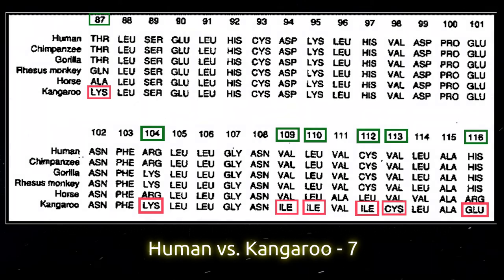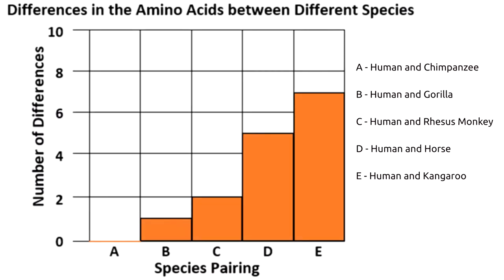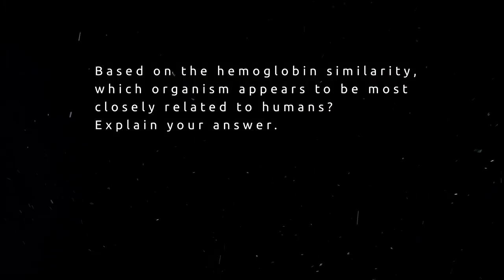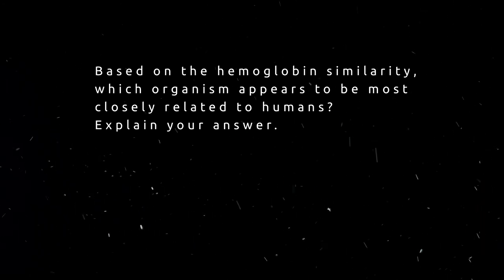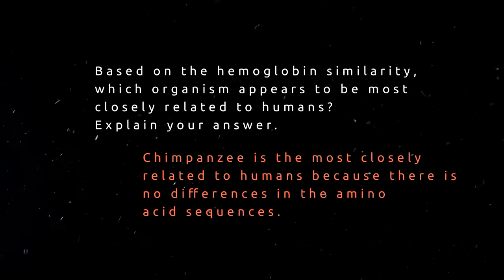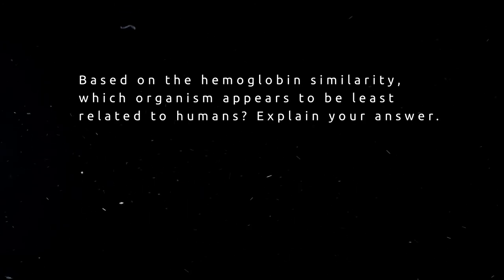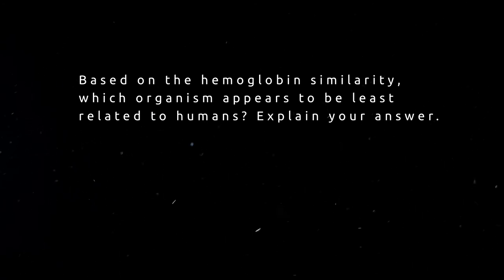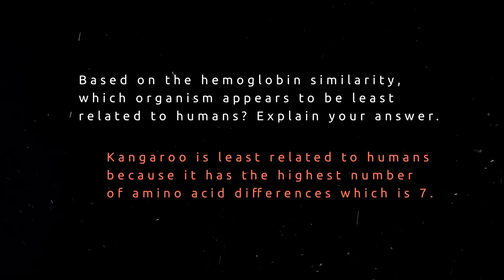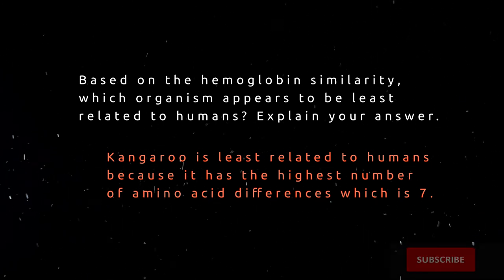After that, you will answer the question: based on the hemoglobin similarity, which organism appears to be most closely related to humans? It is the chimpanzee — based on the amino acid differences, we have zero differences. The second question: based on the hemoglobin similarity, which organism appears to be least related to humans? It is the kangaroo, because the number of amino acids that differ from us is 7, making kangaroo the least related to us.